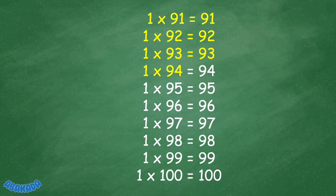1 times 94 equals 94. 1 times 95 equals 95. 1 times 96 equals 96. 1 times 97 equals 97. 1 times 98 equals 98. 1 times 99 equals 99. 1 times 100 equals 100.